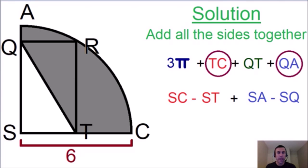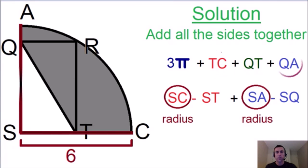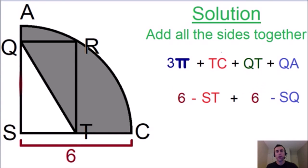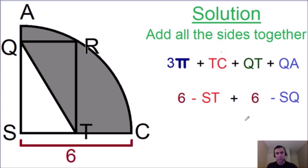SC and SA are both equal to the radius of the circle. SC is the radius of the circle, and SA is also the radius of the circle. Since they're both radii, their lengths are both equal to six. So SC plus SA equals 12.